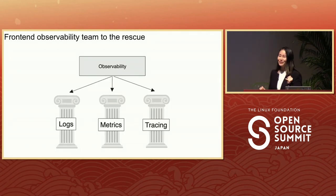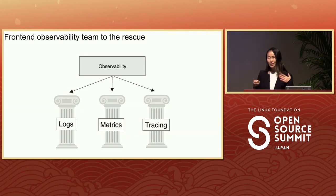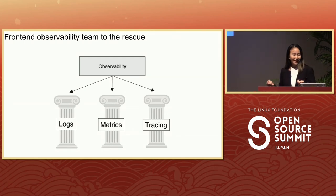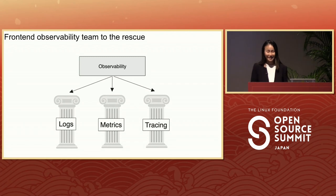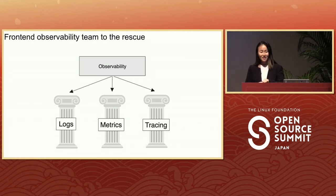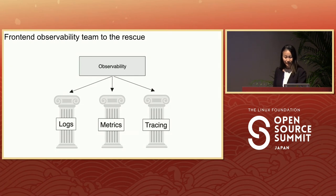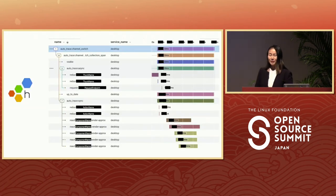I was pulled into investigating why the channel switch was getting worse over time, and what could be done on the front-end side. And from this effort came the front-end observability team. We collected logs, metrics, and traces during a channel switch to figure out what was happening that could lead to the performance issues. For tracing in particular, we used Honeycomb for visualizations.